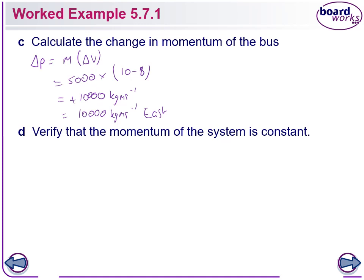Verify that momentum of the system is constant. The change in momentum of the whole system equals the change in momentum of the car plus the change in momentum of the bus: negative 10,000 plus 10,000 equals zero. Therefore there is no change in momentum — momentum is conserved.